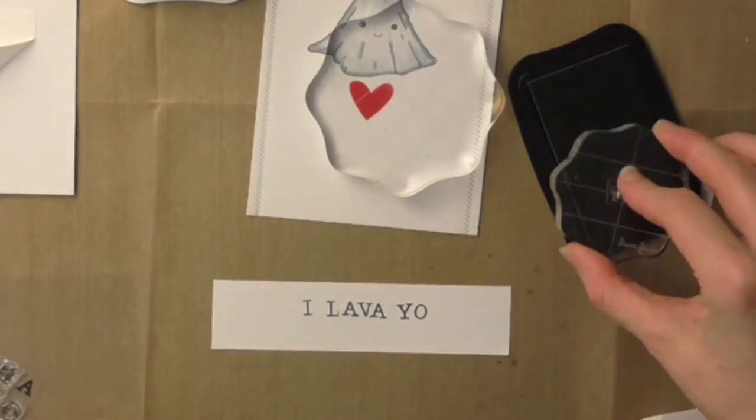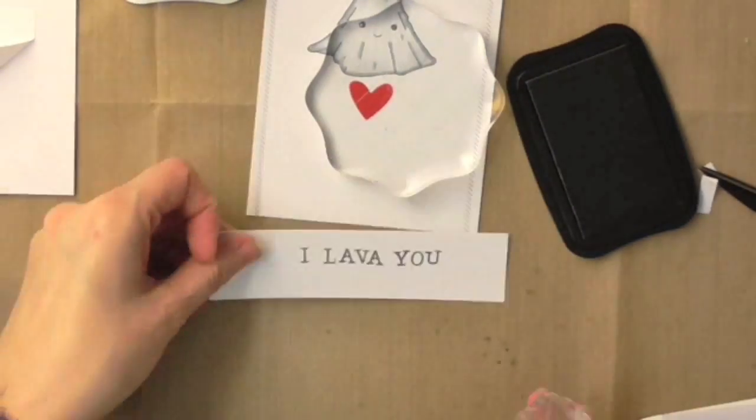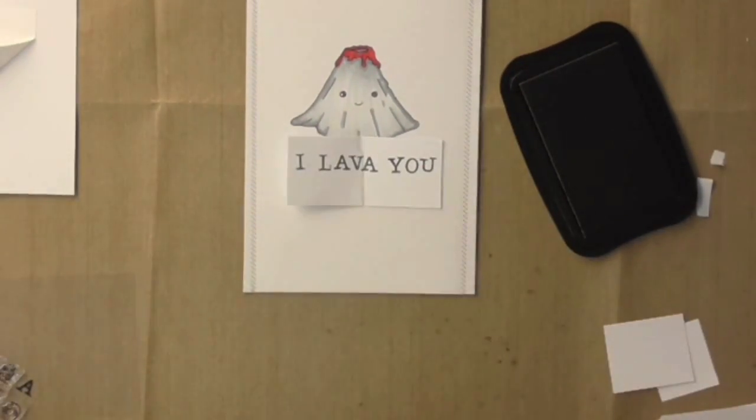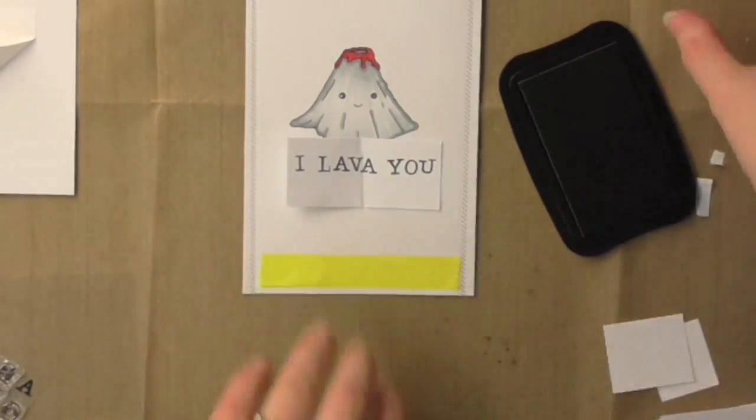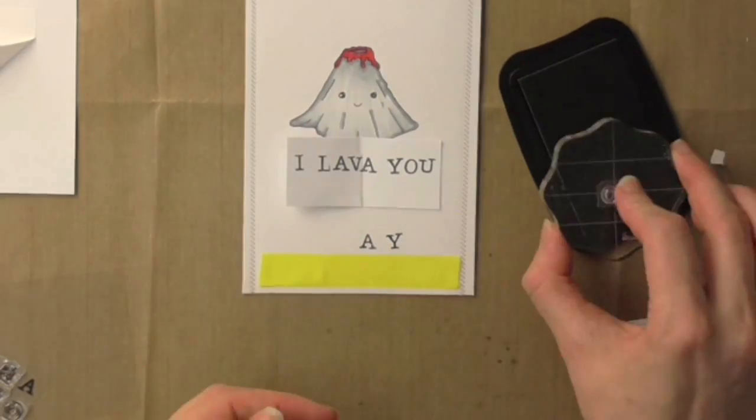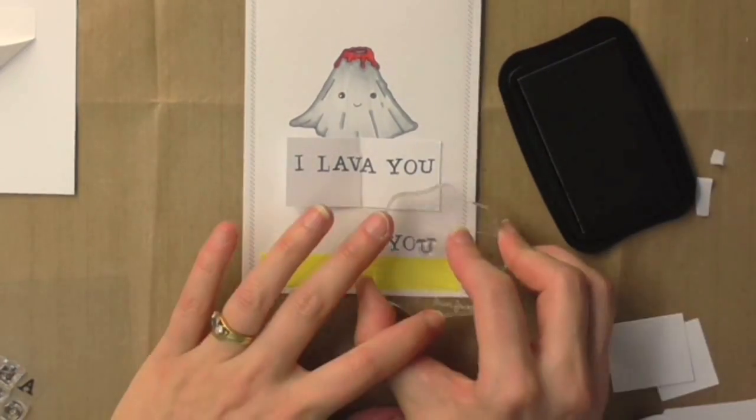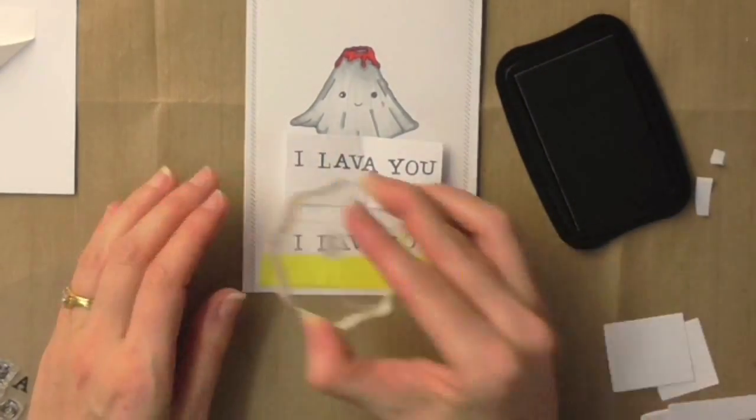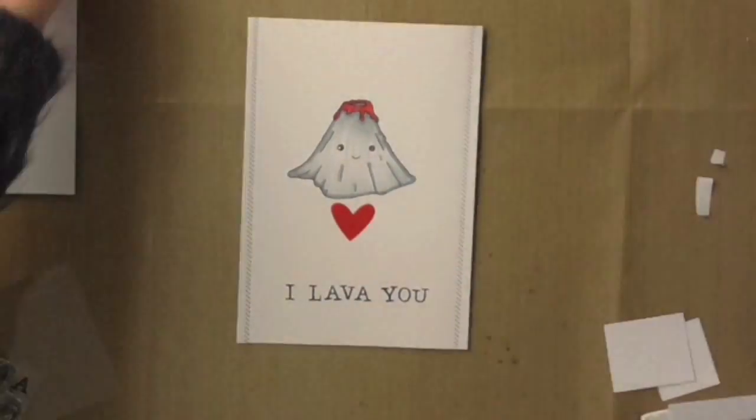I stamped it first on some scratch cardstock. This is also a good way to make sure that you get your sentiment centered. I've cut it out, folded it in half so I know exactly where the halfway mark is. Then using a piece of washi tape or post-it tape as a guide for your bottom line, you know exactly where to position each of your letter stamps. I start from the middle and then work my way out.